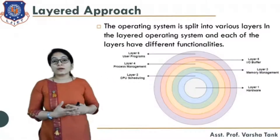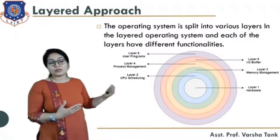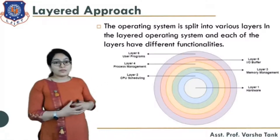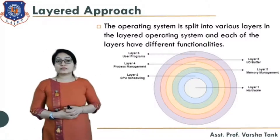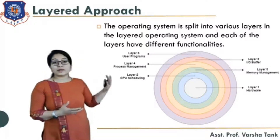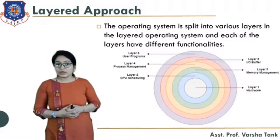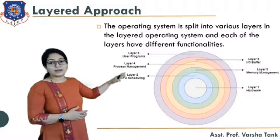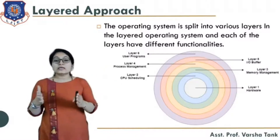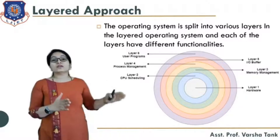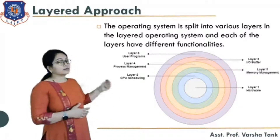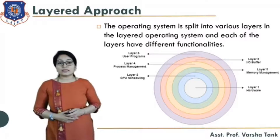One layer is for the user purpose, another for process management, then another for CPU scheduling, then the innermost layer for hardware, then memory management, and then input-output buffer. So these are the layer technologies — your entire operating system is divided according to the functionality it provides.